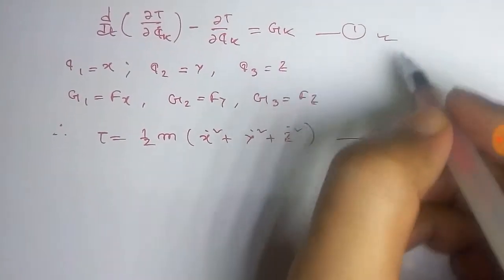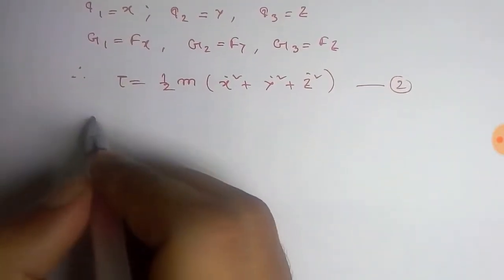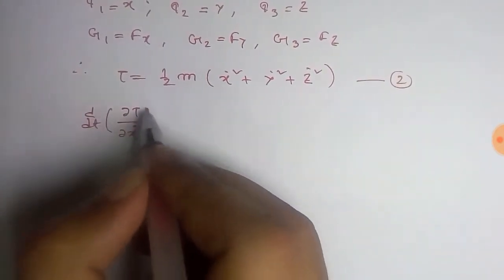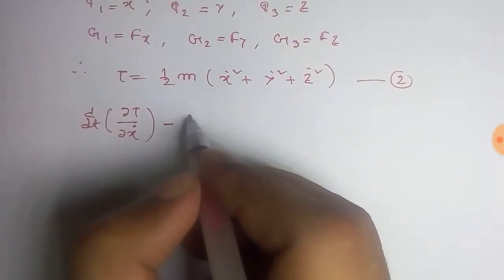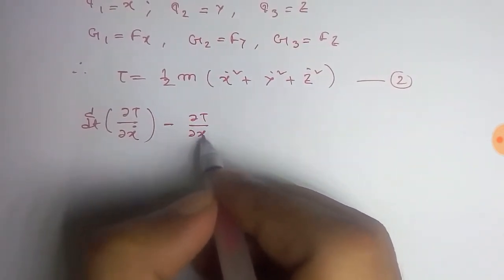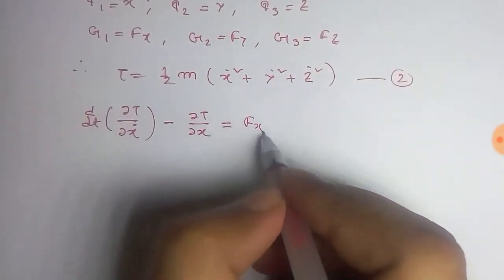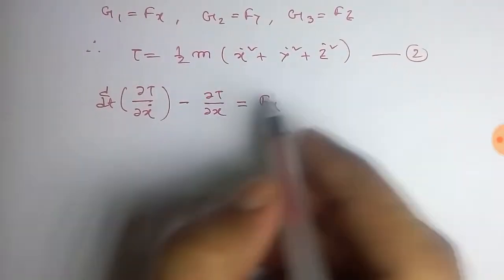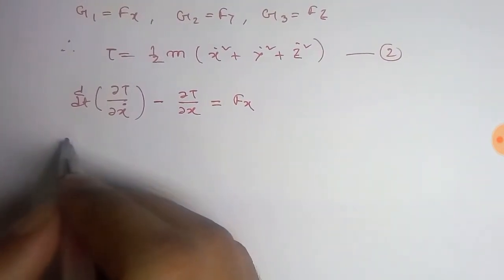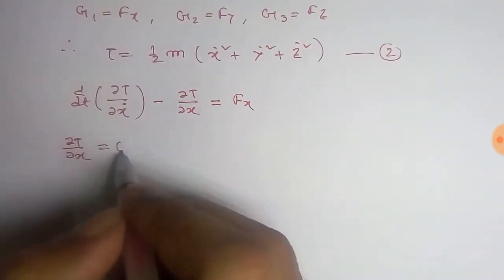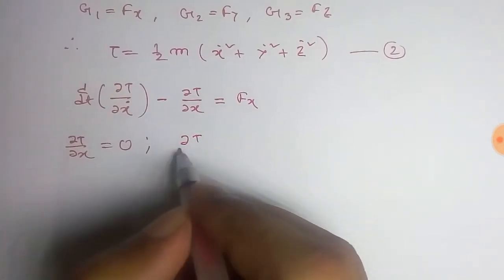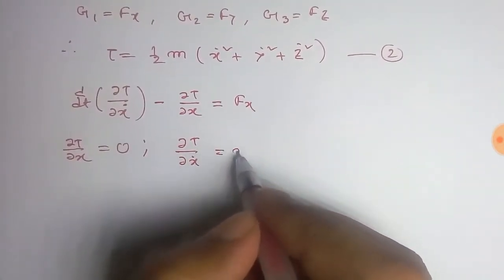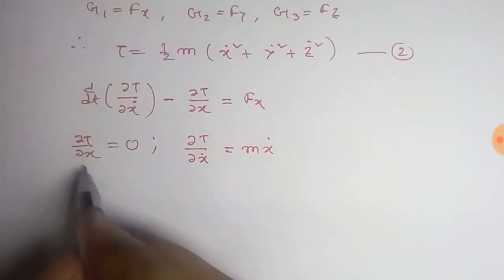d/dt of ∂T/∂ẋ minus ∂T/∂x equals Fx. But from equation two we get that ∂T/∂x equals zero, and ∂T/∂ẋ equals mẋ.